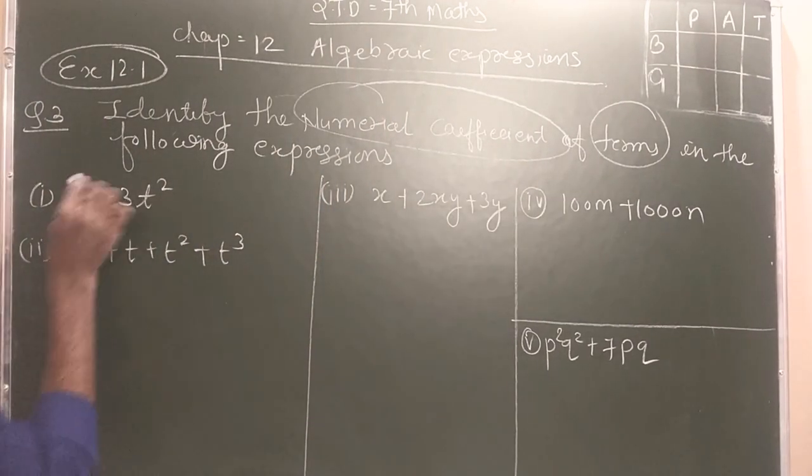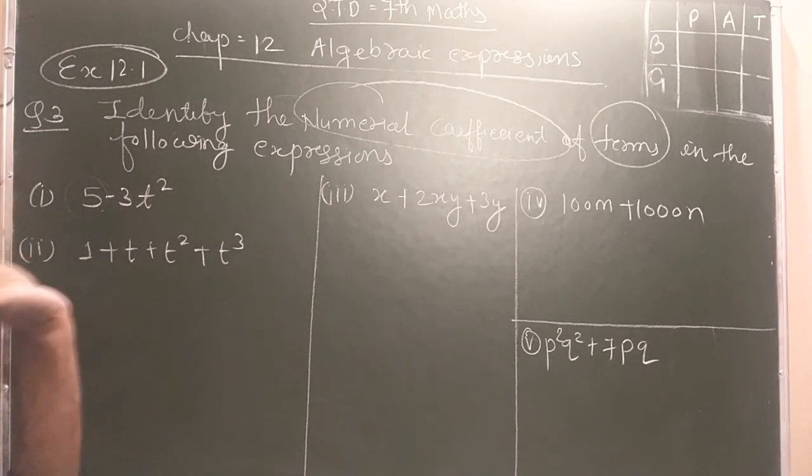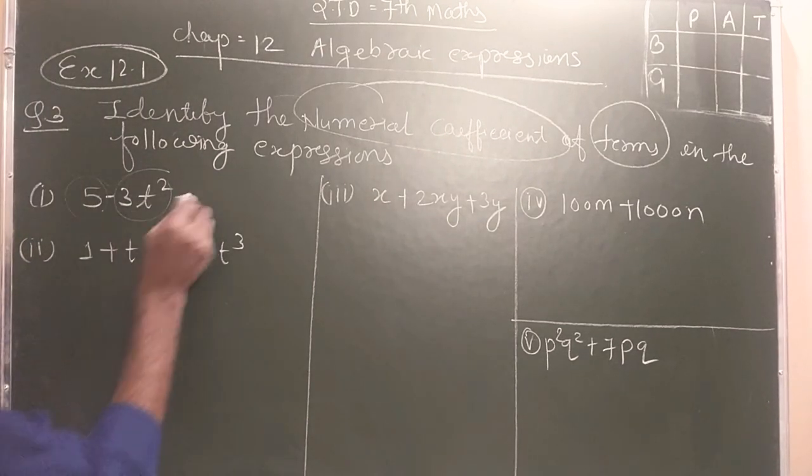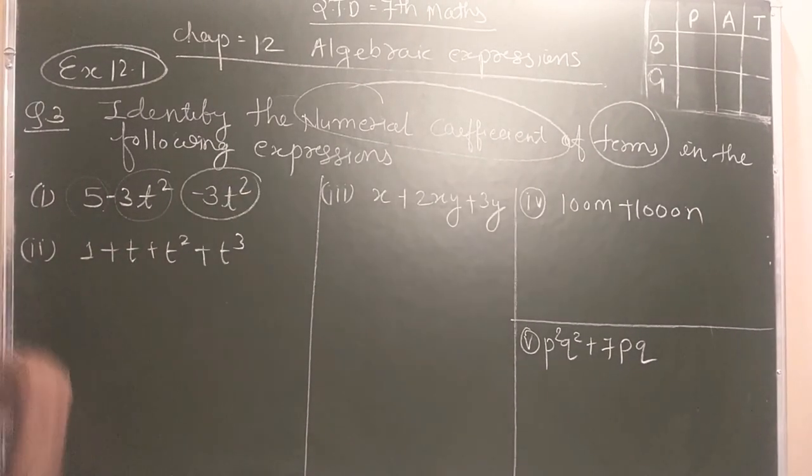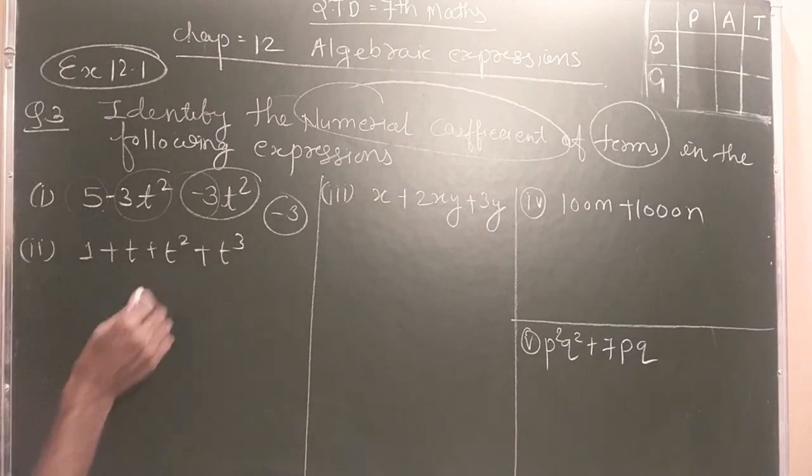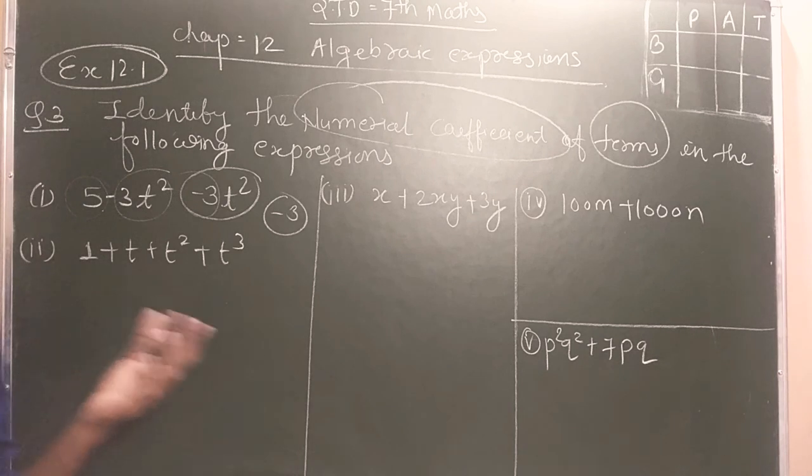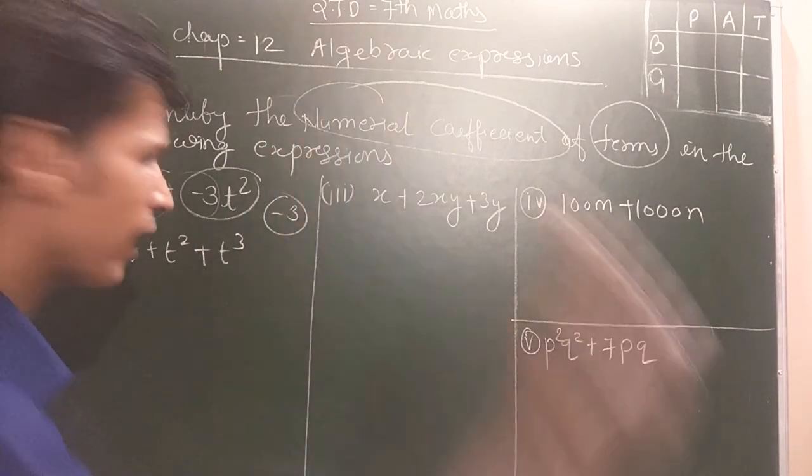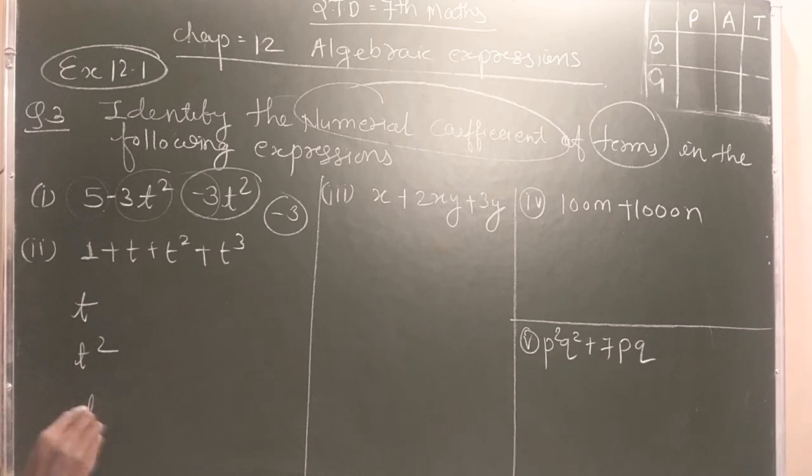Student, 5 is constant because here is no variable. Here is 3t², minus 3, 3t², minus 3a. Now second sum, this one doesn't have any variable. The variable is T, T square, T cube.